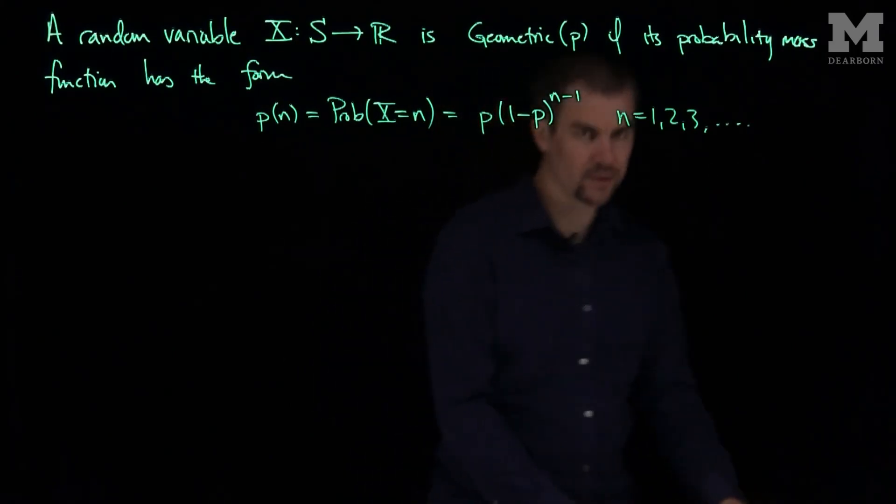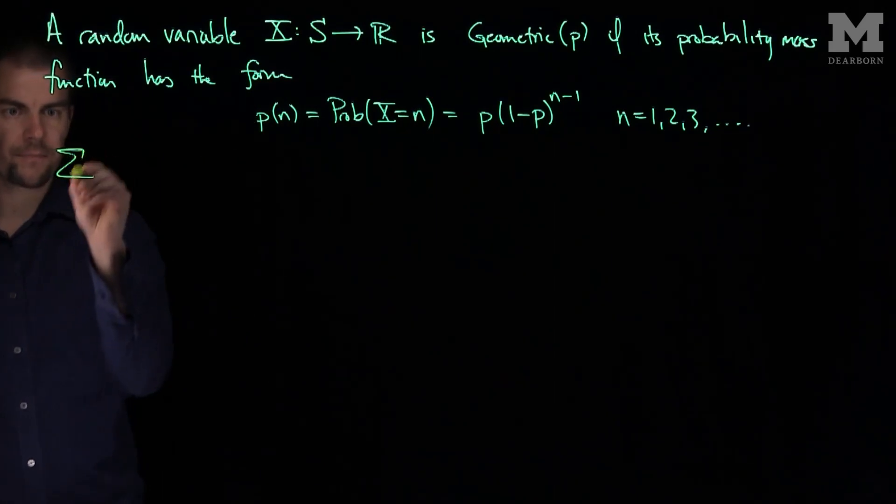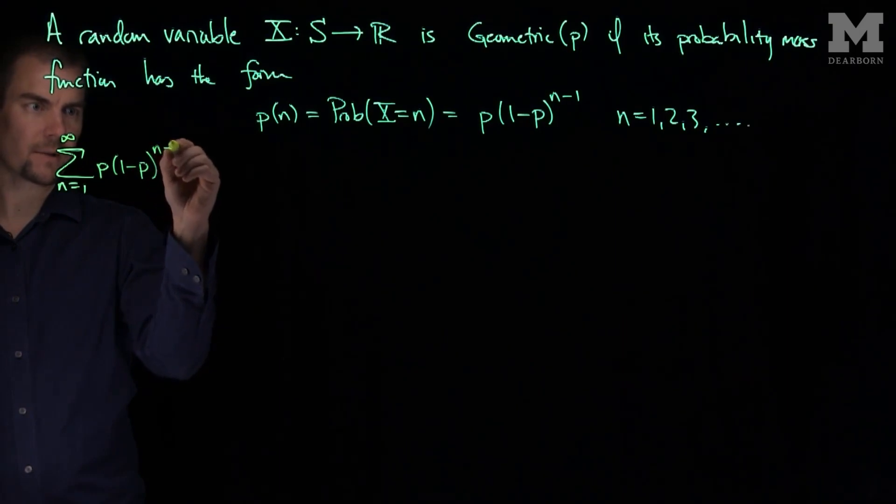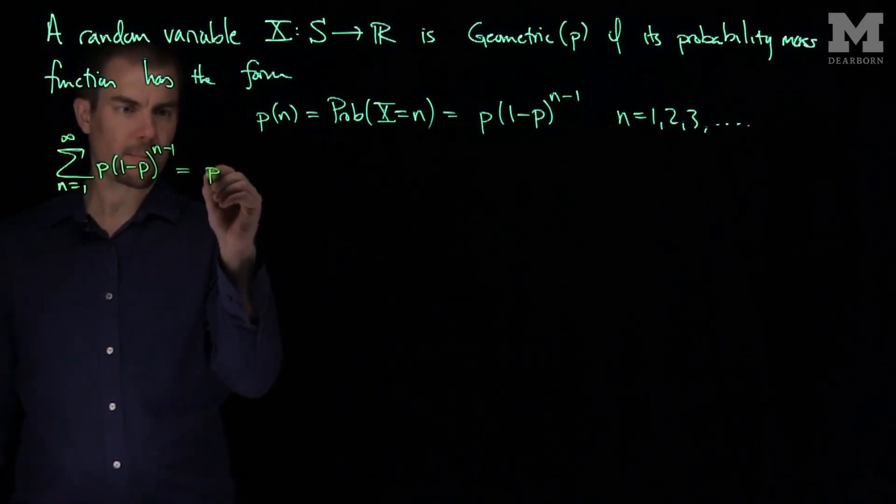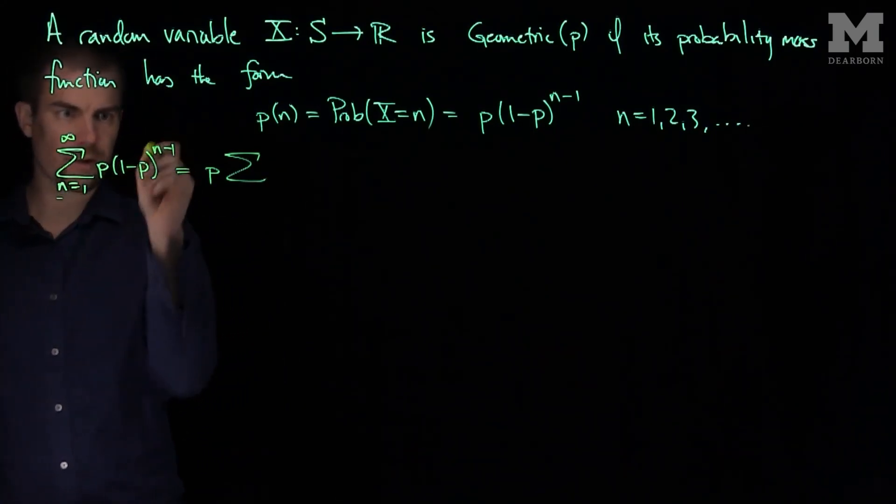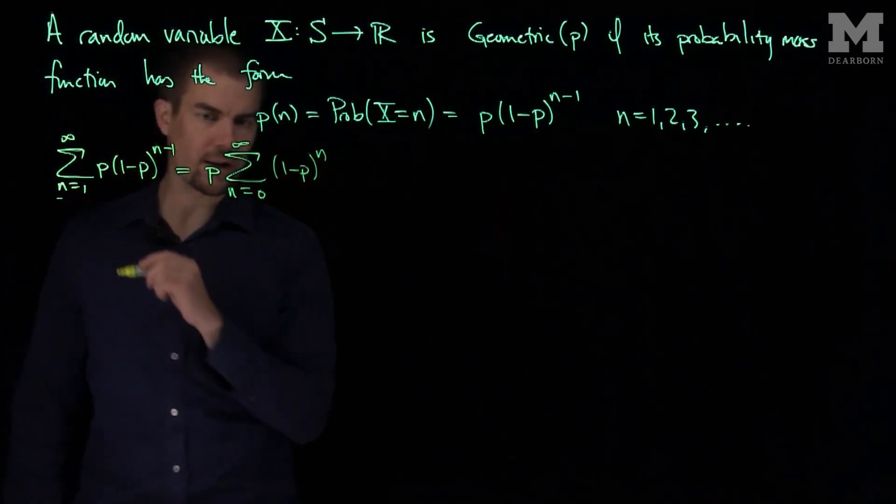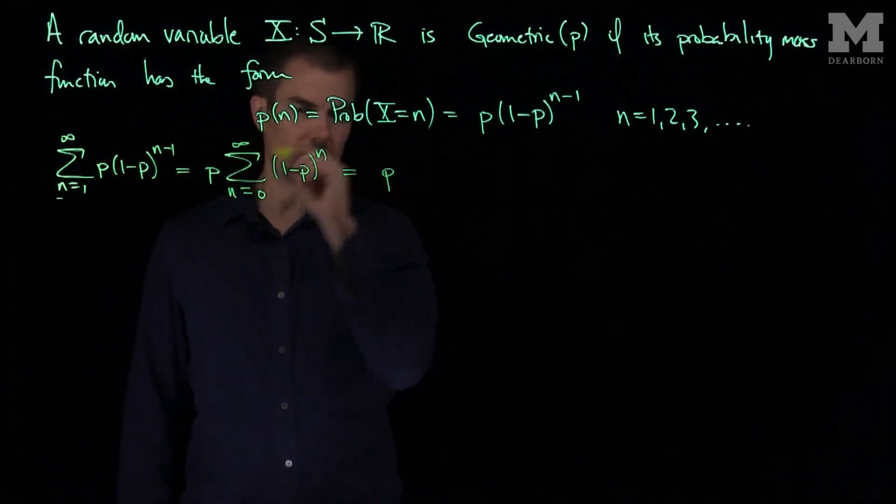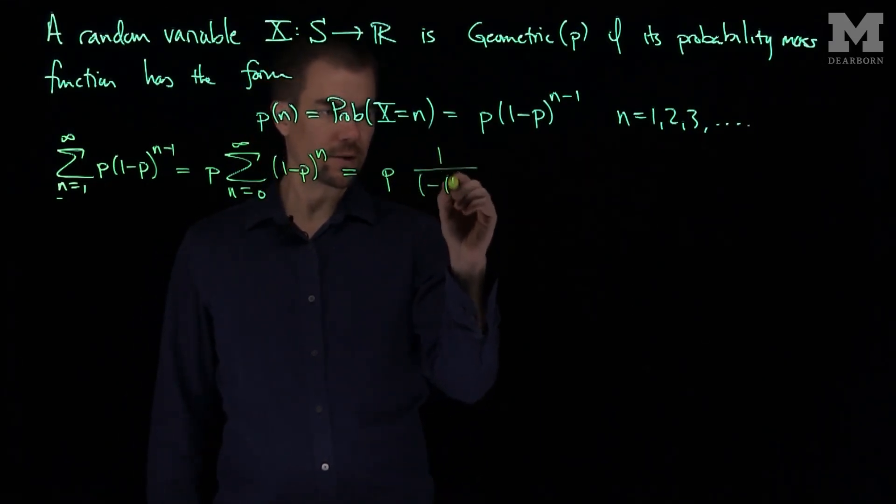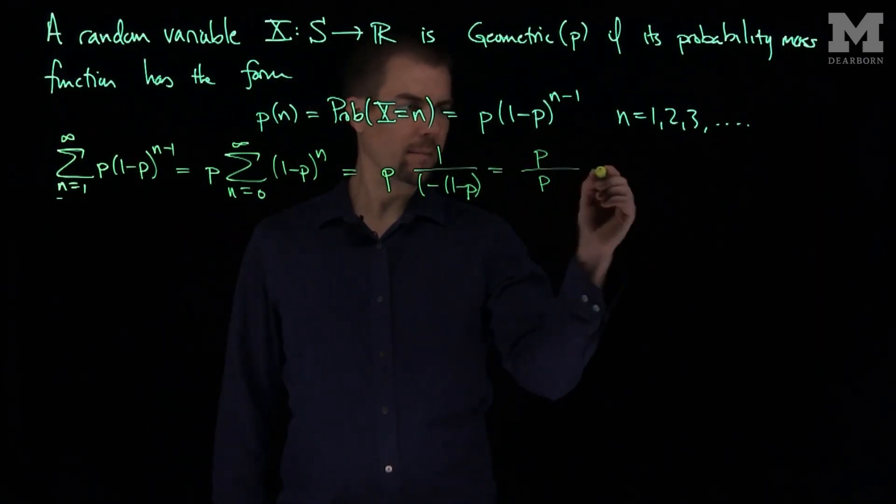And of course we can check to see that this actually is a valid probability mass function. Because if I sum up all these values over here we should get 1. So if we sum n goes from 1 to infinity p times (1-p) to the n minus 1, what we have is p times the sum—I'll shift the index, subtract 1 here and add one here—so this will be n goes from 0 to infinity of (1-p) to the power n. This is a geometric progression, so I'll get 1 over 1 minus (1-p). This is just p over p and it's equal to 1.